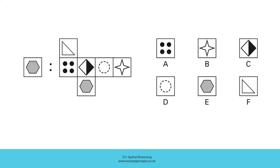In order to answer this question, we're going to consider this net. This net will fold to create a cube. The cube has six different faces and one of the faces will be directly opposite this face. The correct answer is represented by one of these six answer options. To help us choose the right answer option, we can take a closer look at this net and think about how it would fold to create a cube.